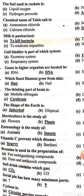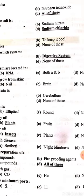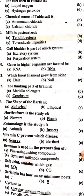The chemical name of table salt is sodium chloride. Milk is pasteurized to kill bacteria. The gallbladder is part of the digestive system. Genes in higher organisms are located in DNA.